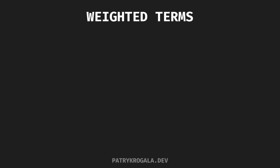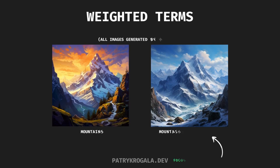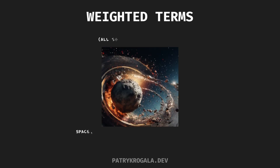Sometimes you need the AI to focus. Weighted terms are your spotlight. Say you want a mountain but no trees — just weight 'tree' negatively and poof, treeless mountains. Mix and match weights for vibrant results, like this colorful planet in space.